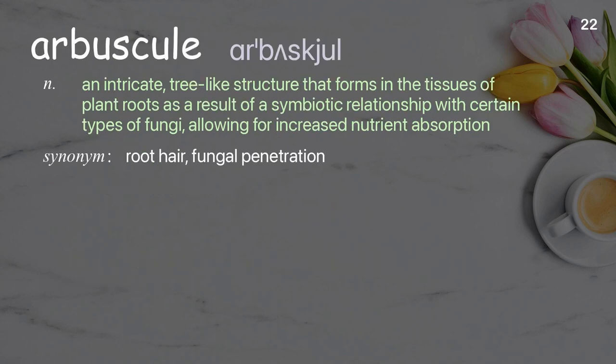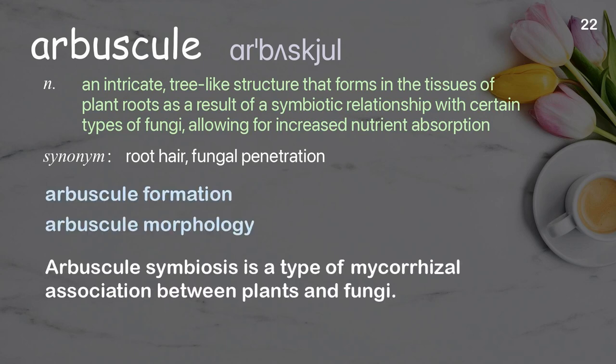Arbuscule: an intricate, tree-like structure that forms in the tissues of plant roots as a result of a symbiotic relationship with certain types of fungi, allowing for increased nutrient absorption. Examples: arbuscule formation, arbuscule morphology. Arbuscule symbiosis is a type of mycorrhizal association between plants and fungi.